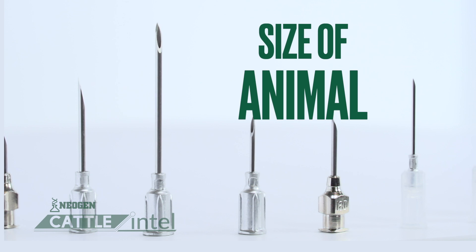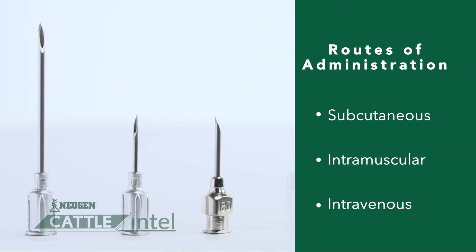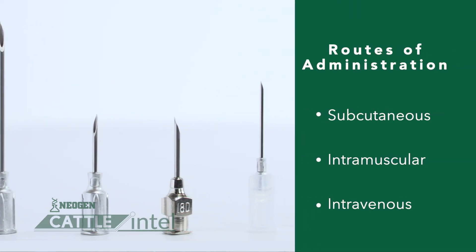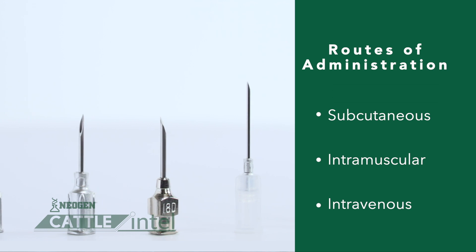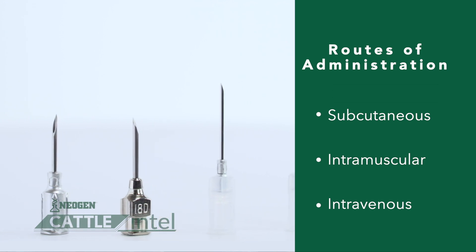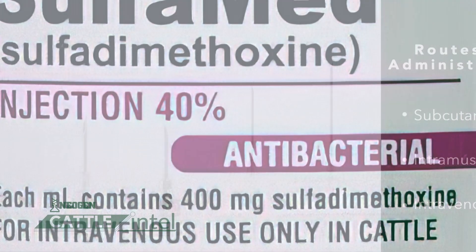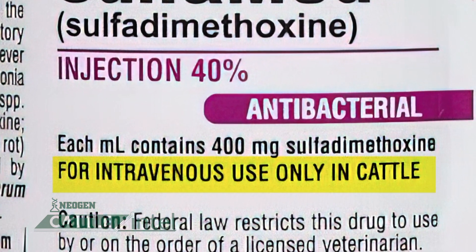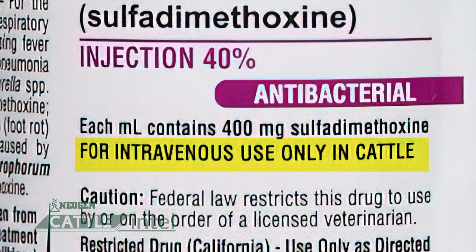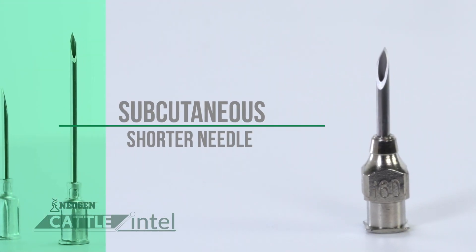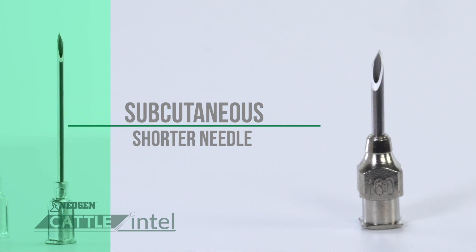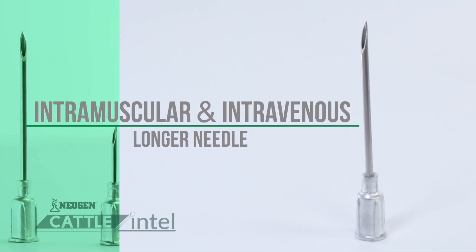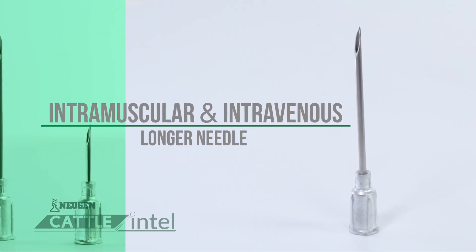The route of administration will determine the length of the needle. The routes of administration will either be subcutaneous, intermuscular, or intravenous. You will determine that route of administration by properly reading the label of the product. A shorter needle will be used for subcutaneous injections, and a longer needle will be utilized for intermuscular and intravenous injections.